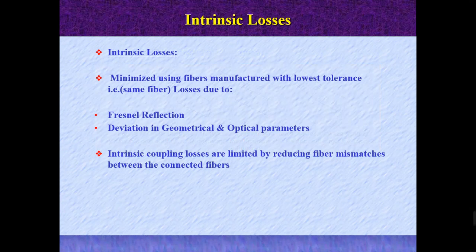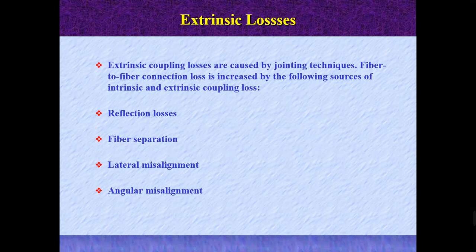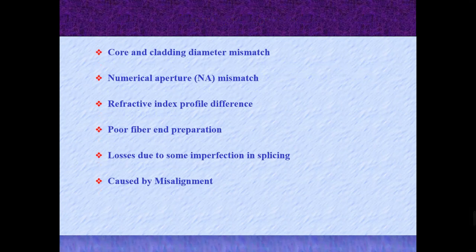Talking about intrinsic losses, these are minimized using fibers manufactured with low tolerance; losses are due to deviation in geometrical and optical parameters. Intrinsic coupling losses are limited by reducing fiber mismatches between the connected fibers. Moving towards extrinsic losses, these are coupling losses caused by jointing techniques. Fiber-to-fiber connection loss is increased by the following sources of intrinsic and extrinsic coupling loss: reflection losses, fiber separation, lateral misalignment, angular misalignment, core and cladding diameter mismatch, numerical aperture mismatch, refractive index profile difference, poor fiber end preparation, and loss due to imperfections.